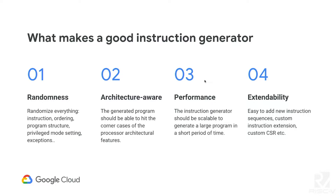Let's start with what we think a good random instruction generator should have. The first and most basic one is randomness — you can randomize a lot of things as defined in the spec and in the implementation. The second is an architecture-aware instruction generator, meaning you're not just randomly generating stuff but designing for your architectural features. The third is performance — your generator should be high-performance, generating very large programs in a very short time. And you also need it to be extendable and configurable, so you can extend it to your own instruction extensions or add new sequences.